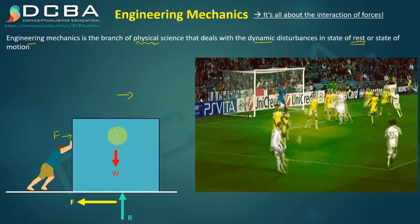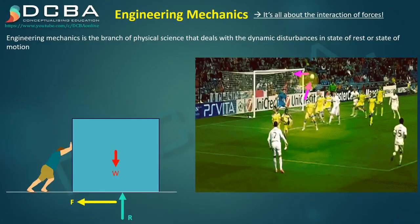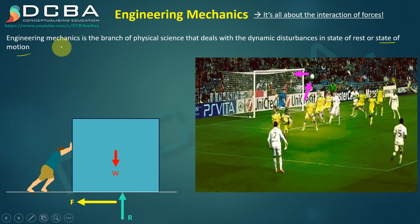Another scenario: a famous footballer, Mr. Ronaldo, is kicking a football. We can analyze the forces acting on the ball. Once kicked, the ball will not remain in the air forever — it comes down. The ball also turns while moving forward. The forces causing it to turn, move forward, stay in the air, and come back down are all covered in engineering mechanics. This example is the state of motion.